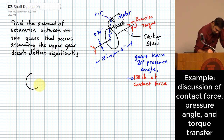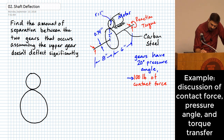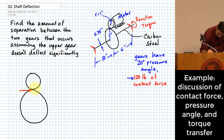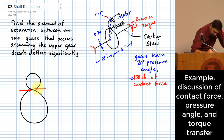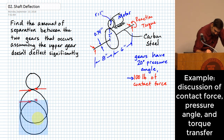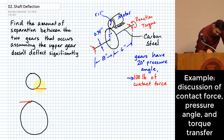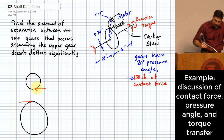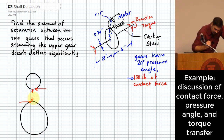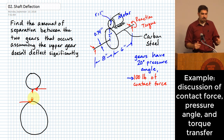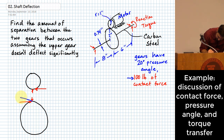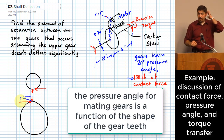When real gears mate with each other, you don't just have a tangential component on each piece - even though that's the component that does the torque transfer. There is also a component that tends to push these two gears apart. The fact that there are both of those components leads to the idea of a predictable pressure angle, which is basically the angle implied by the relative magnitude of those two components.